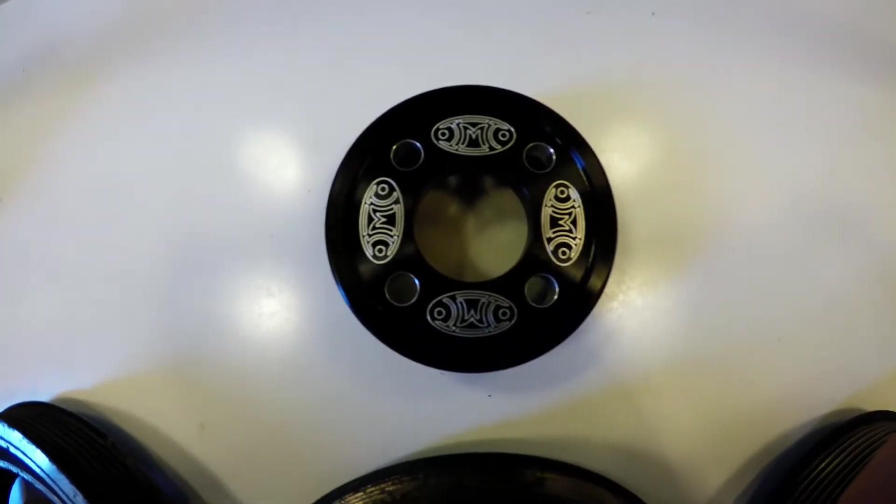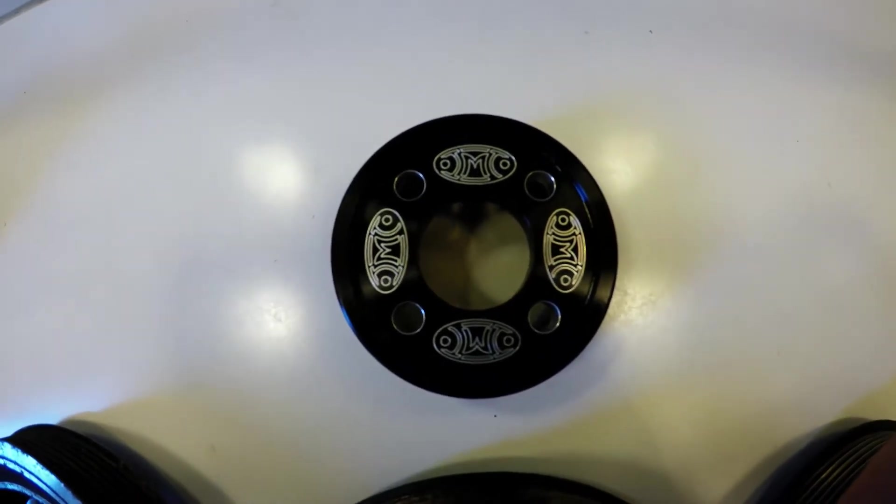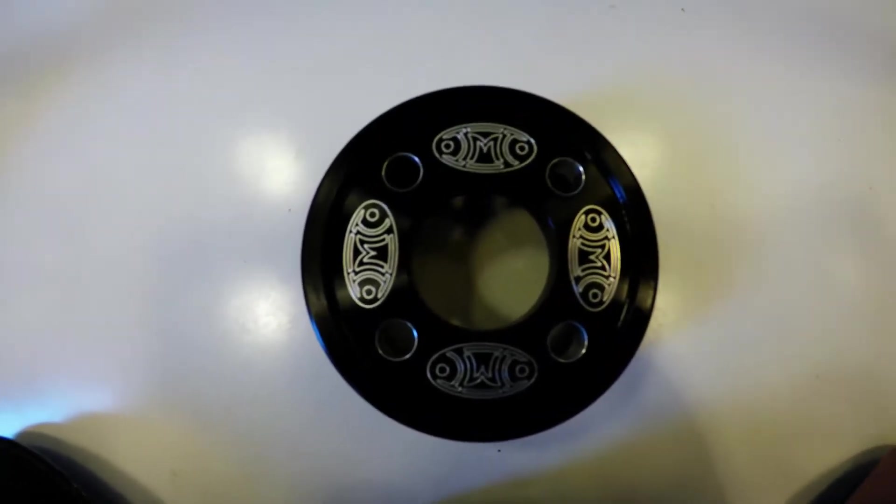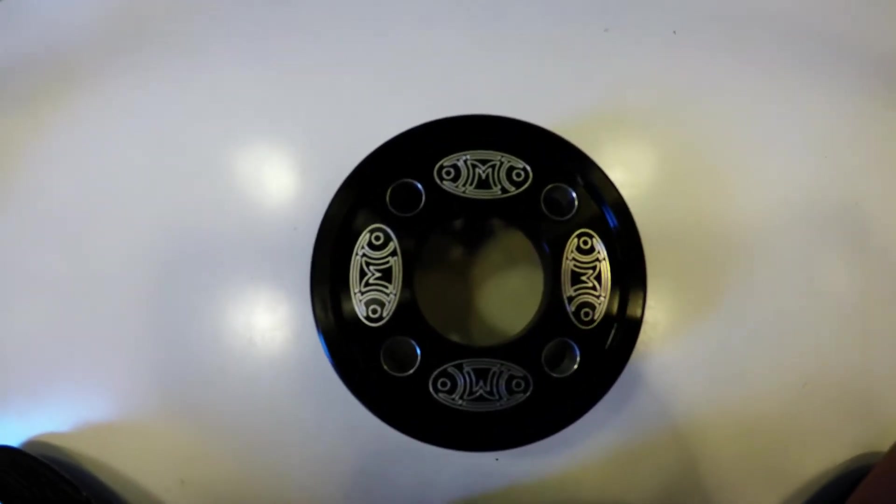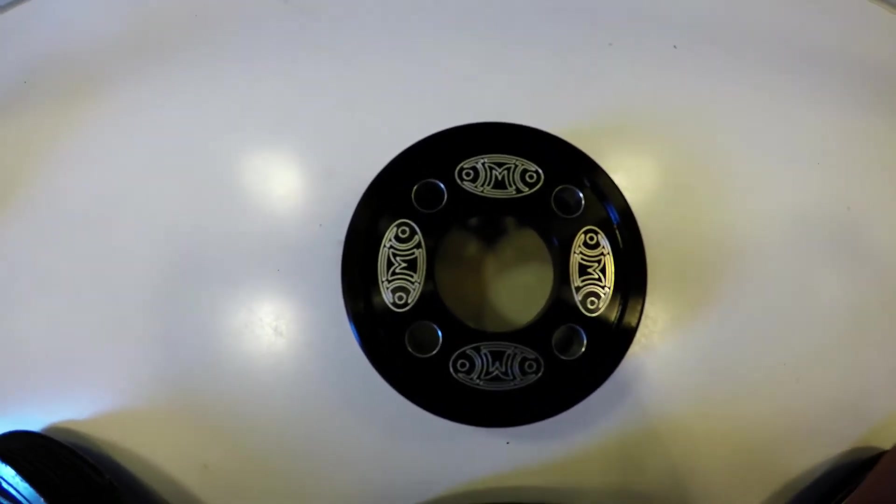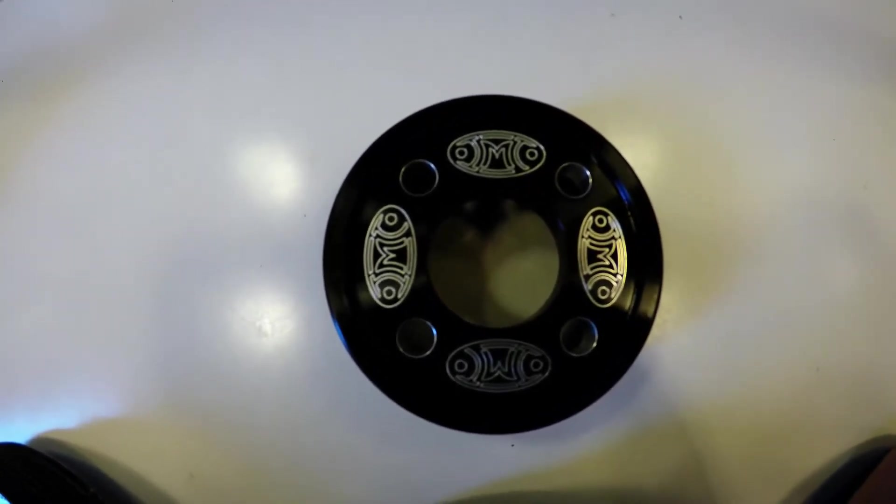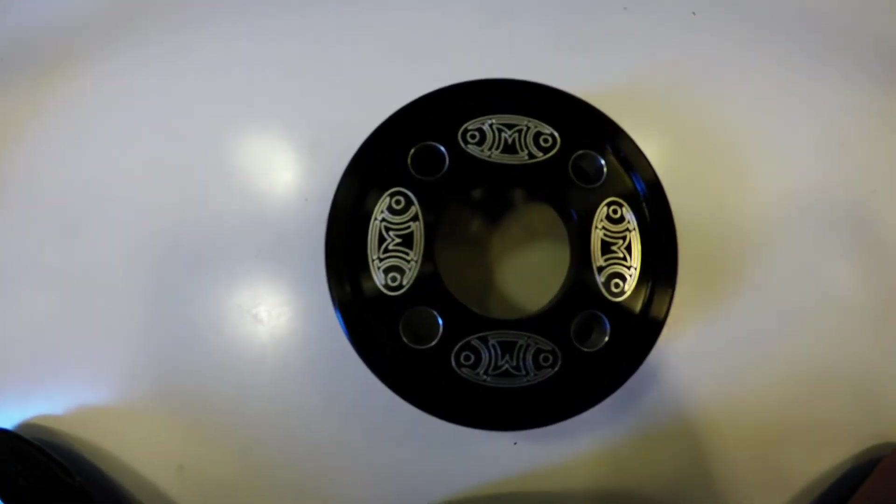Okay, so this one is a lot smaller than the stock pulleys that come with the Kraftwerks Stage 2. So the reason why you want the smaller pulley for the blower is that when the belt travels around the pulley, it's a lot shorter, so that means it's gonna spin the blower faster.